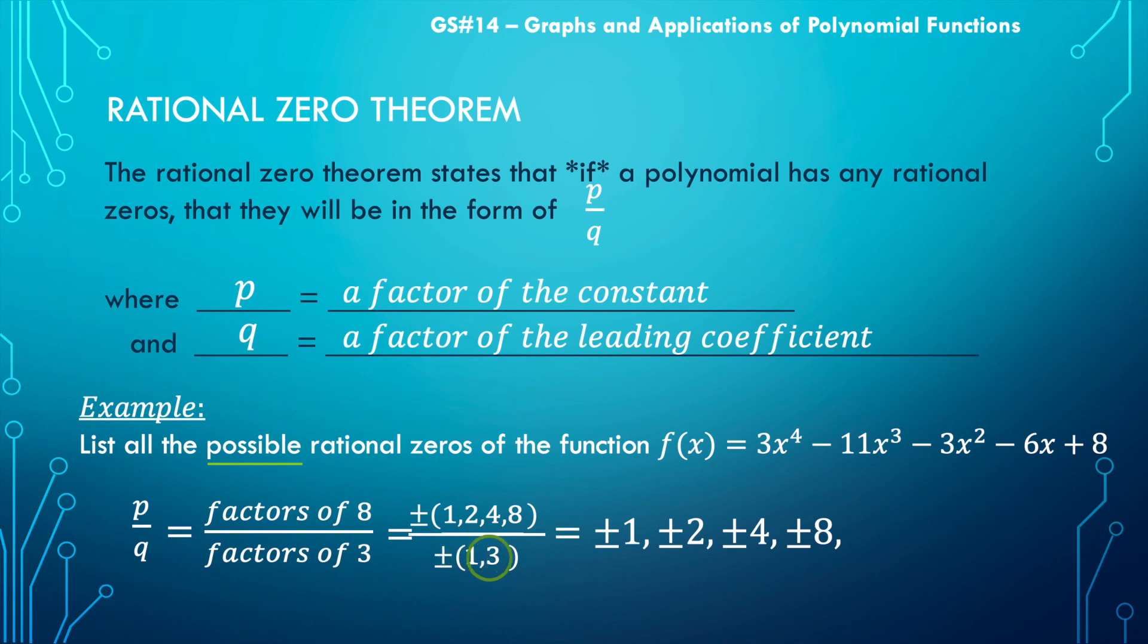Now we're going to think about all those values in the numerator over the second value in the denominator. So we're going to add some more options here: plus or minus one over three, plus or minus two over three, plus or minus four over three, and plus or minus eight over three.